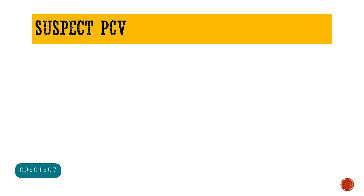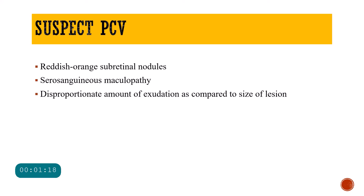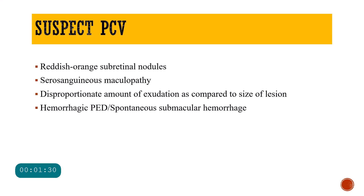When do you have to suspect PCV in cases of AMD? Whenever you are seeing a reddish-orange subretinal nodule and serosanguinous maculopathy — a disproportionate amount of exudation compared to the size of the lesion. You see a reddish-orange lesion which is too small, yet the amount of exudation is quite huge, and that exudation can lead to hemorrhagic pigment epithelial detachment and sometimes submacular hemorrhage spontaneously.